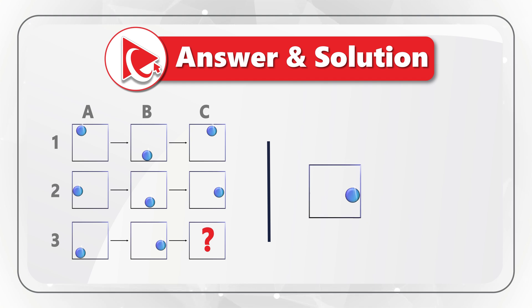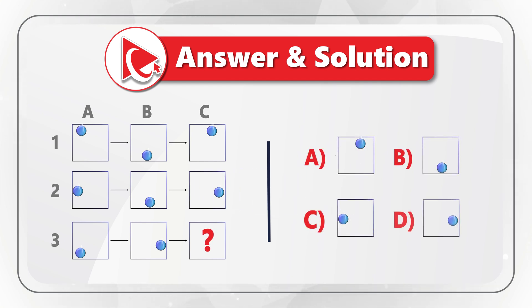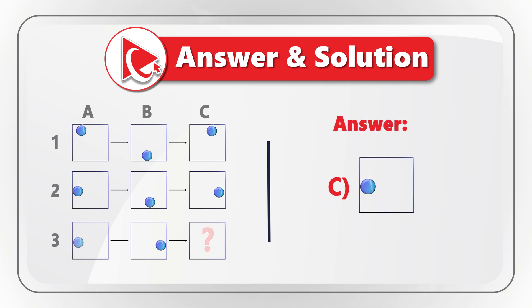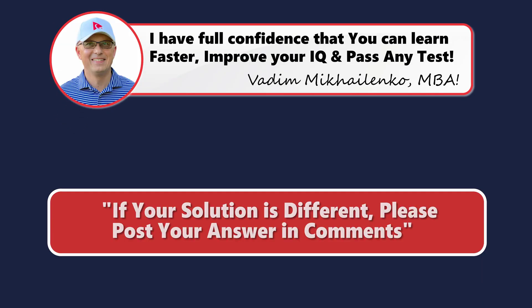Let's confirm this with row 2. In A2, the ball is against the left wall. It moves toward the bottom wall, bounces, then moves toward the right wall. Knowing the pattern, we can detect the answer: the ball in row 3 moves from position 1 to position 2 to position 3. So the correct answer is choice C.